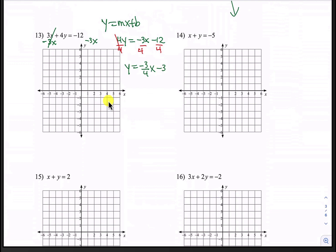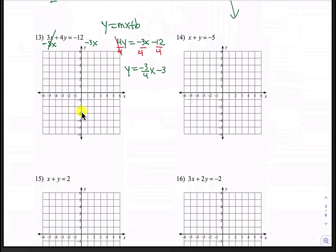Our y-intercept is negative 3 — let's put that here. Our slope is negative 3 fourths. The negative 3 tells us to go down 3 and then the 4 tells us to go to the right 4. Starting here, go down 3 — 1, 2, 3 — and then to the right 4 — 1, 2, 3, 4. Let's go ahead and connect with a line.